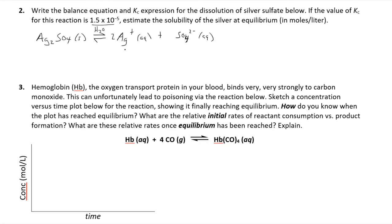If you think about this, both ions are aqueous, meaning their concentrations can change over time. A solid, however, we do not include in our equilibrium expression. So Kc equals the concentration of silver-plus squared — because there's a coefficient of two — times the concentration of sulfate. We write equilibrium concentrations since we're calculating Kc.